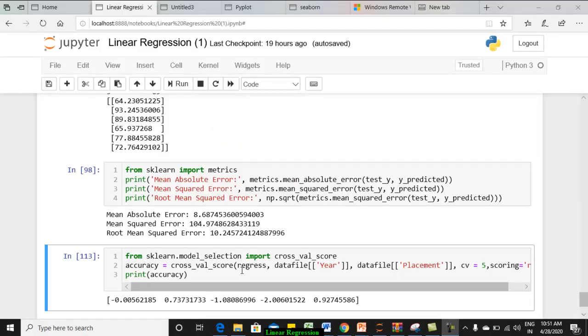Coming to the implementation part of cross validation, in sklearn.model_selection package, we have a sub package called cross_val_score.